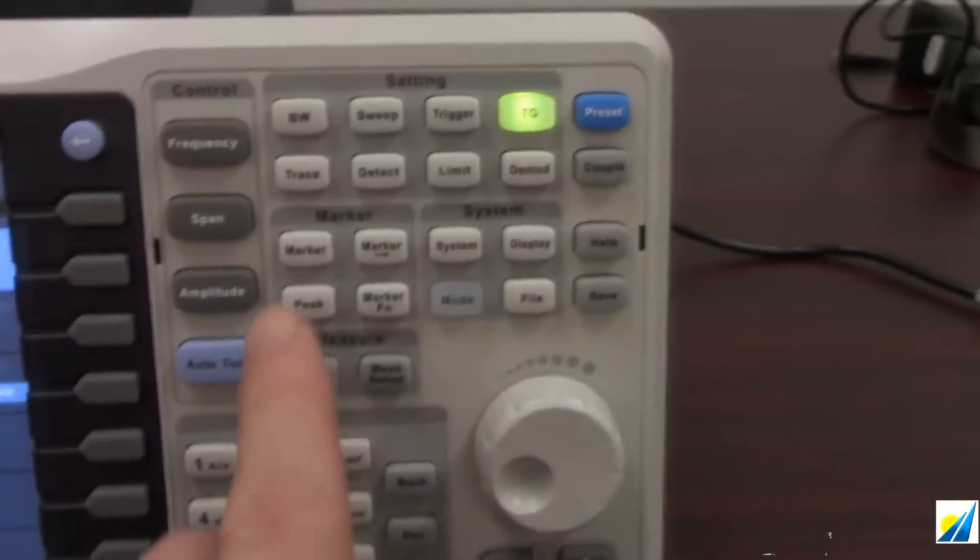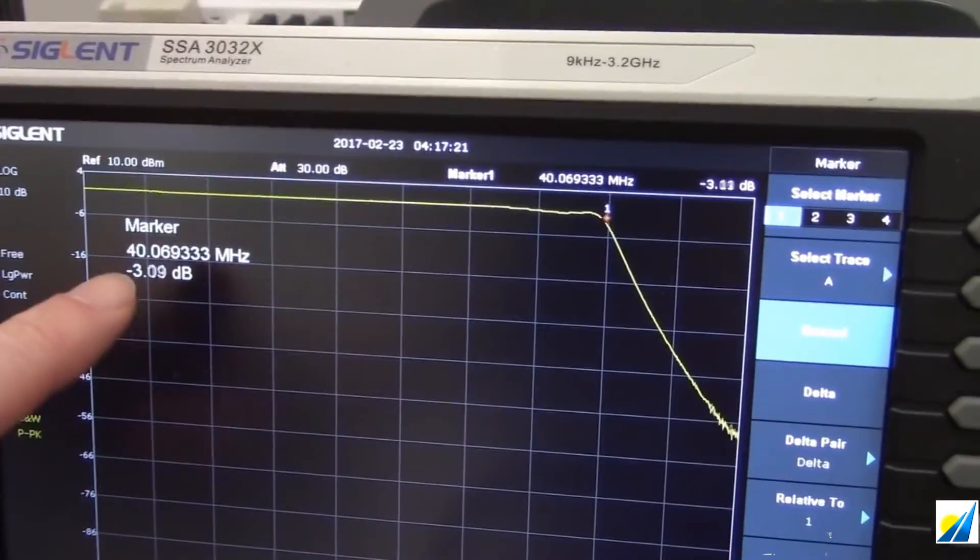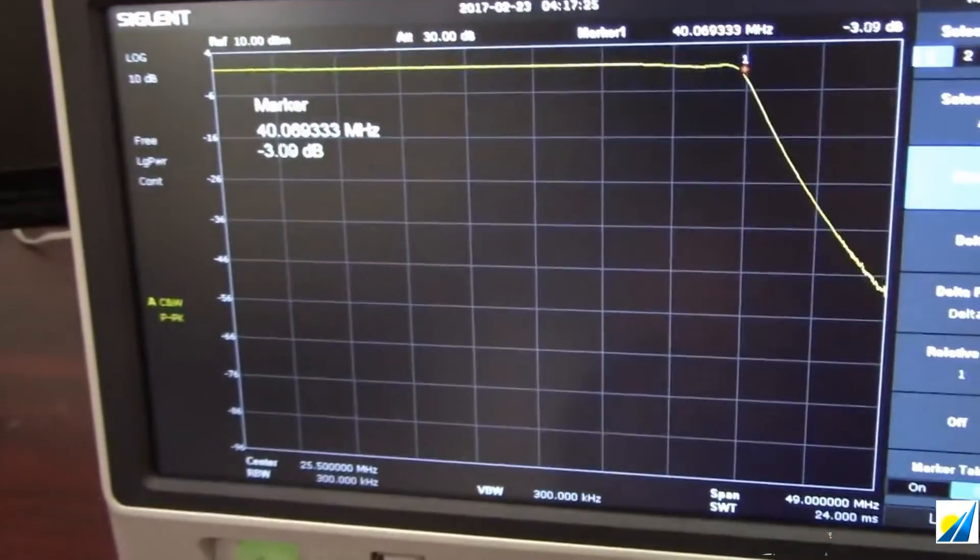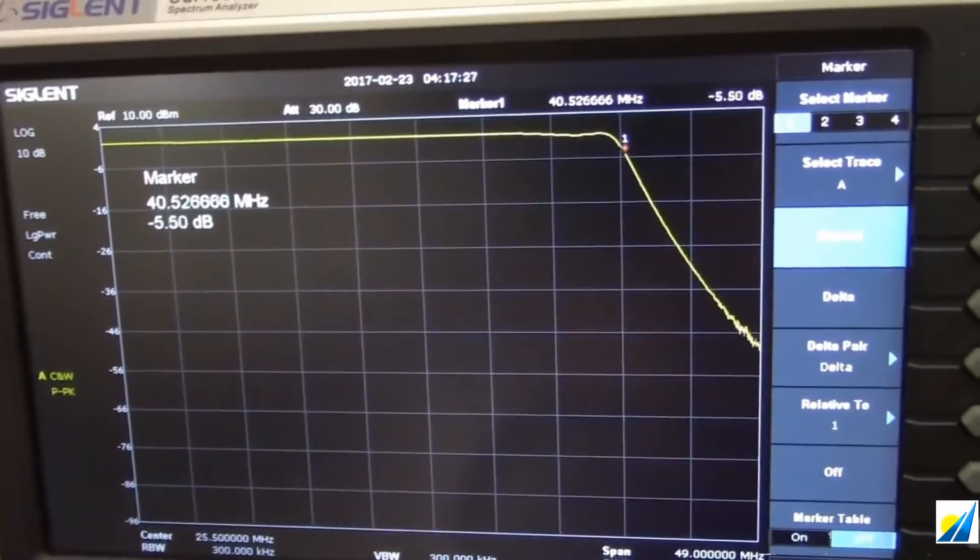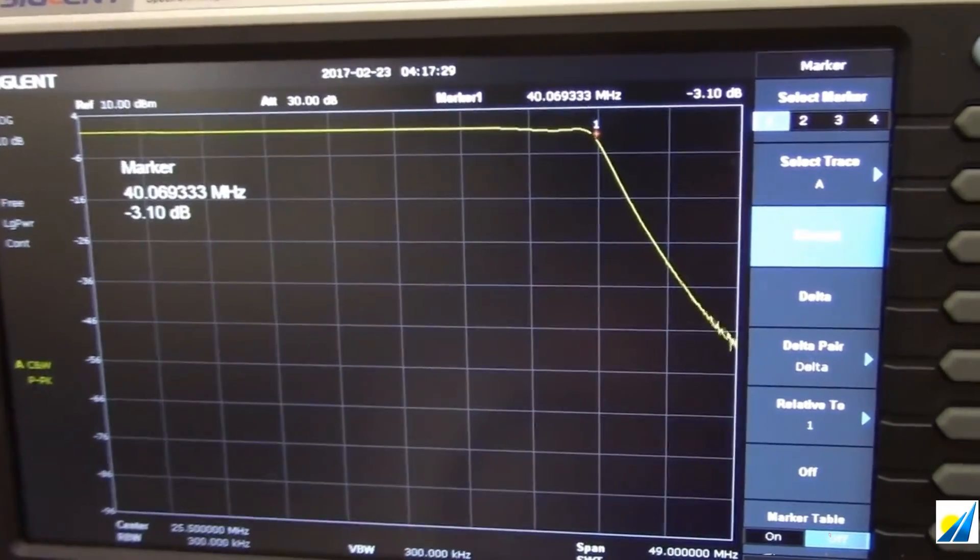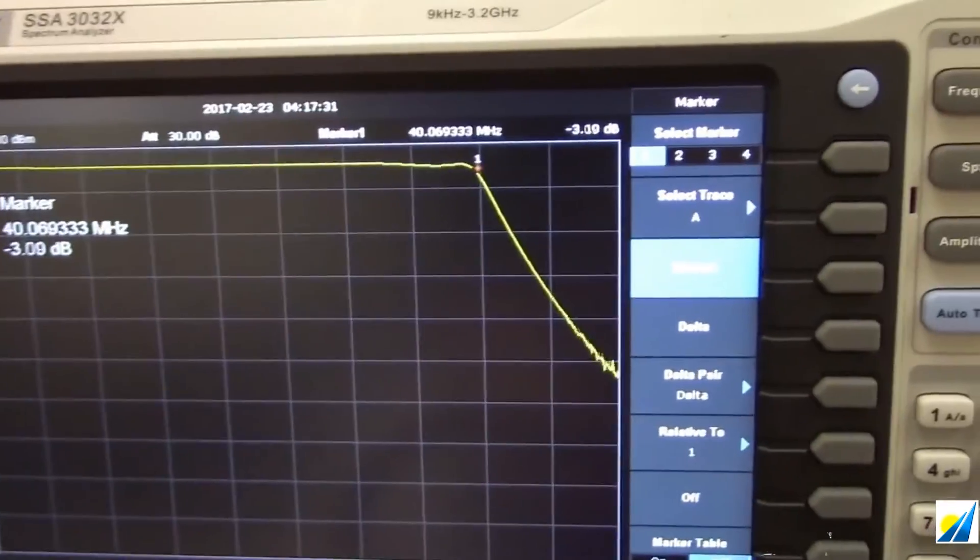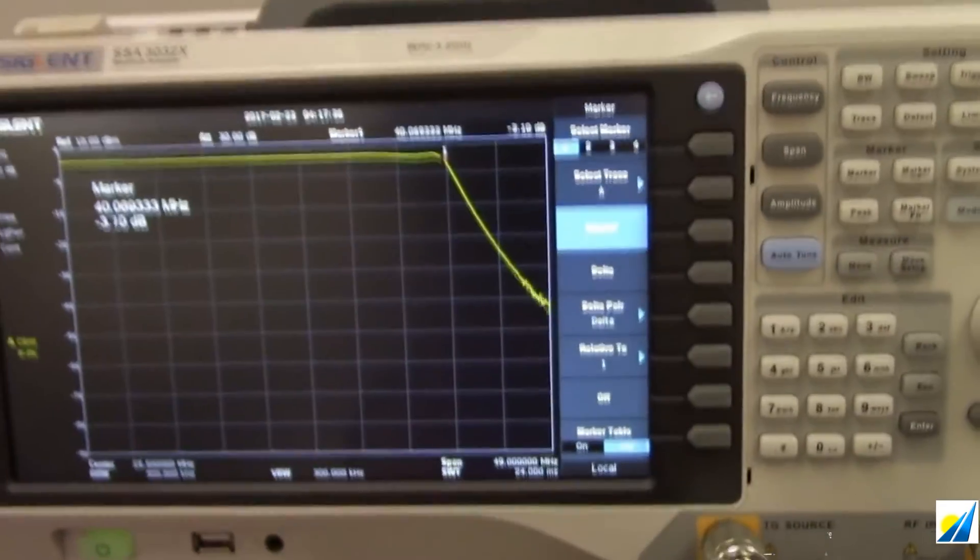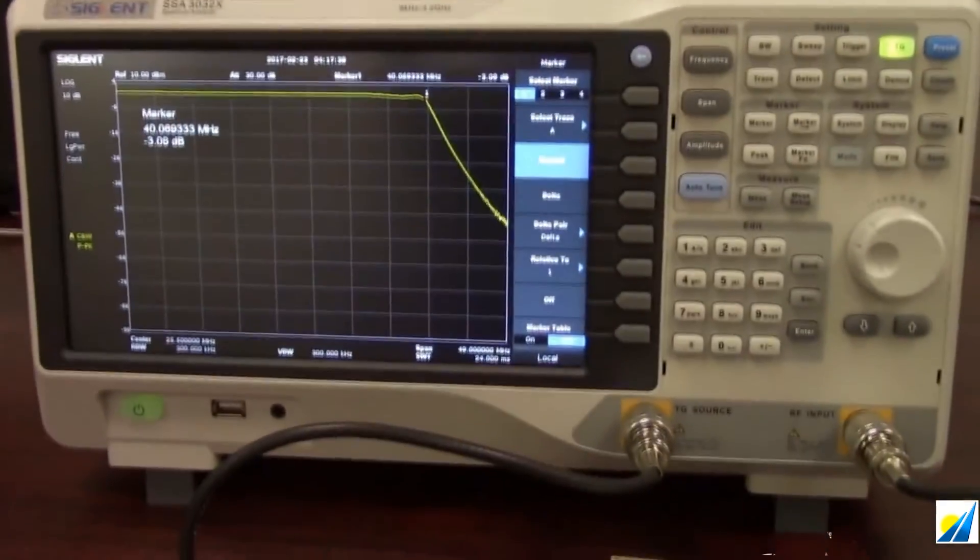And so I can go over here to the marker function. Marker is going to provide us with a frequency and the power readout at that particular point. And so we can just adjust the marker position. And so if we want to find a 3 dB point, that's going to be around 40 MHz. So we're getting very similar readings using the spectrum analyzer and tracking generator.